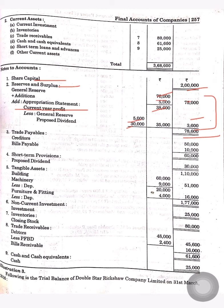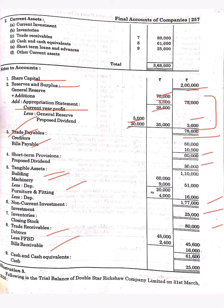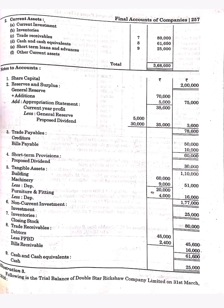Trade payables — bills payable and creditors — bill pay bill 60,000. Short-term provisions for dividend: 30,000. Tangible assets — building, machinery, furniture, etc. — after depreciation: 1,77,000. Non-current investments: 25,000. Inventories — closing stock. Trade receivables — bills receivable minus provision for bad debts. Then cash and cash equivalents. Okay, so let's now fill in the amounts.